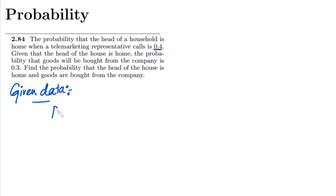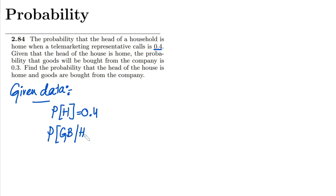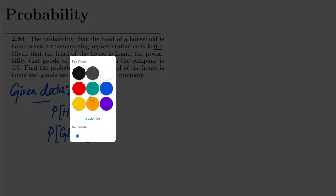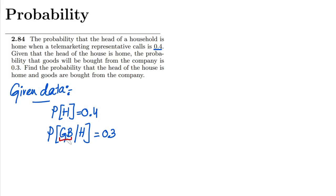So the probability of H is 0.4. Given that the head of the house is home, the probability that goods will be bought from the company is 0.3. This is basically the conditional probability — the probability that goods will be bought given that the head of a house is home — and I am representing goods bought as GB.